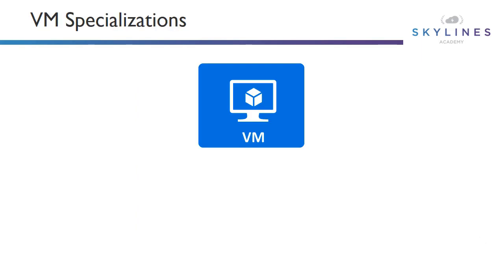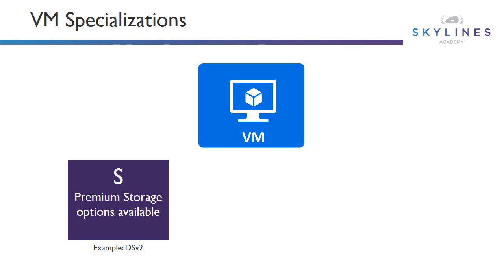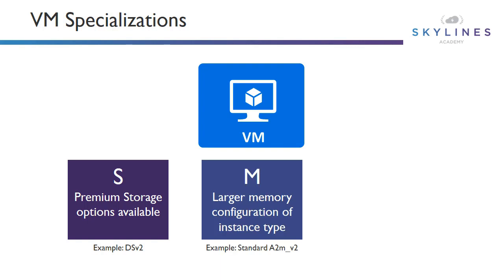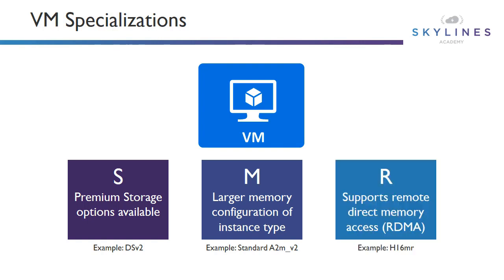Then we go into the specialization. Now that you've got your head around all these types, there are different specializations, and you notice this in the way the instance types are written out. We've got S for premium storage — so if you see a D series, you'll also see a DS version, like DSV2, which is a premium storage option. We have the M specialization for larger memory of a configuration type — so a standard A2 might have a standard A2M that just has more memory. And then finally we have R, which supports remote direct memory access, also known as RDMA, seen in things like H16MR.